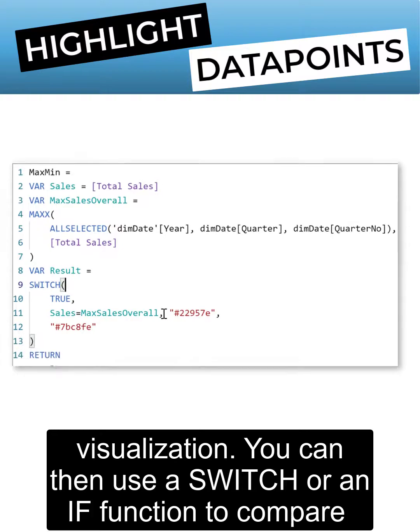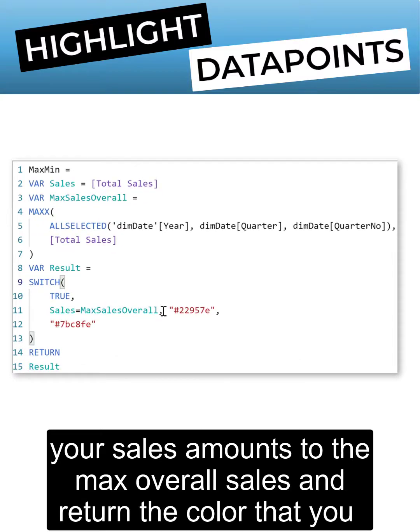You can then use a SWITCH or an IF function to compare your sales amounts to the max overall sales and return the color that you like.